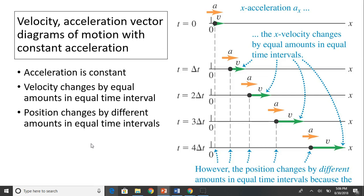Now let's take a look at velocity and acceleration vector diagrams of motion with constant acceleration. Vector diagram uses vectors to describe motion. Since acceleration is constant, the acceleration vector a is the same. They are pointing to the same direction and have the same magnitude. But as you can see, v increases by the same amount. That means acceleration is constant. However, position changes by different amounts in equal time intervals.